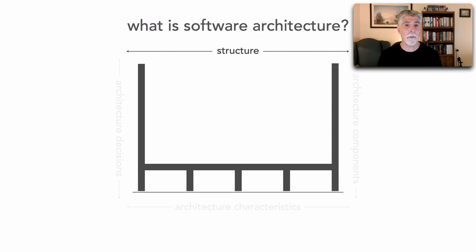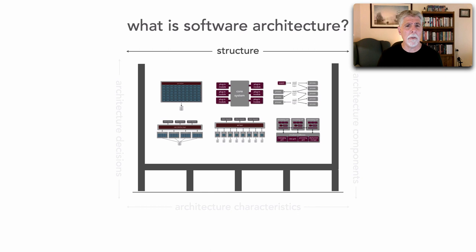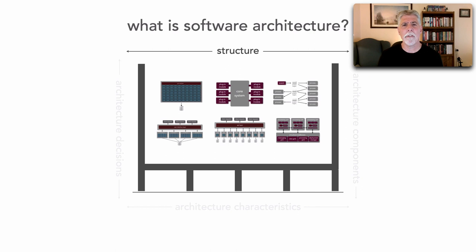Let's talk about the structure first. When we talk about the overall structure of an application from an architecture standpoint, what we're really referring to is a type of architecture style that you're using, or a combination of styles — whether it be a simple monolith, event-driven architecture, microservices, or maybe a combination of space-based microservices — and that kind of forms the overall structure.